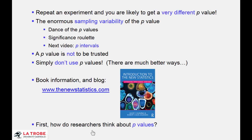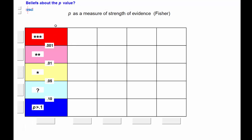But first, how do researchers think about p-values? That's an excellent topic for research, but surprisingly has hardly been studied at all. I suggest most researchers probably think of the p-value as a measure of strength of evidence against the null, following Sir Ronald Fisher. And that's quite sensible.